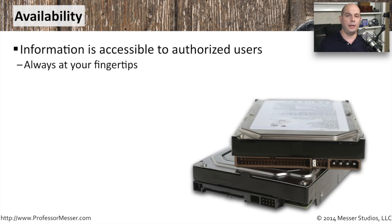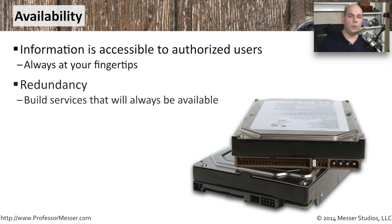The idea of availability means that your information is always going to be something you can access. If you need to get a report from a server, it should always be there. If there's a video you need to watch, that video needs to be instantly available. One way to provide this availability is through redundancy — that means we have multiple systems available to provide access to these services. We might have multiple routers, or multiple switches, or even multiple servers located in different locations. That way, if anything were to happen, we would be assured that the service would maintain its availability, because you'd have a complete duplicate still running somewhere else.